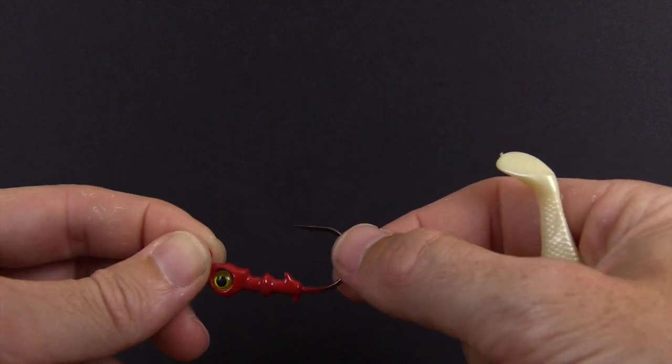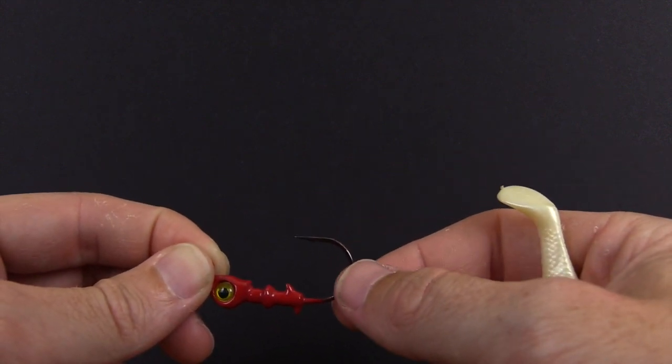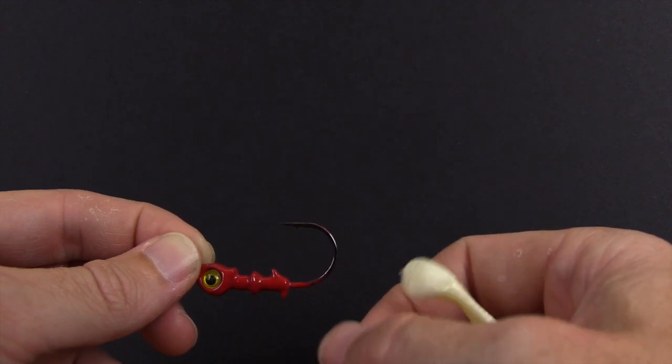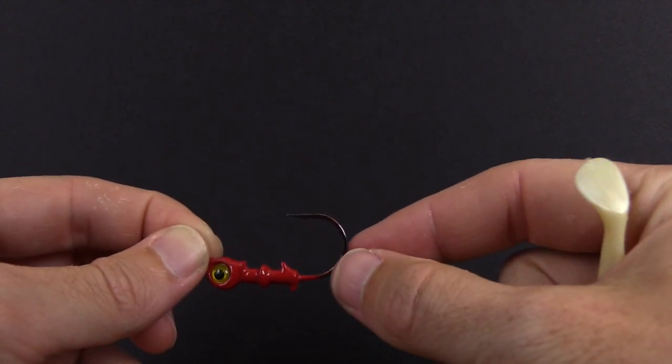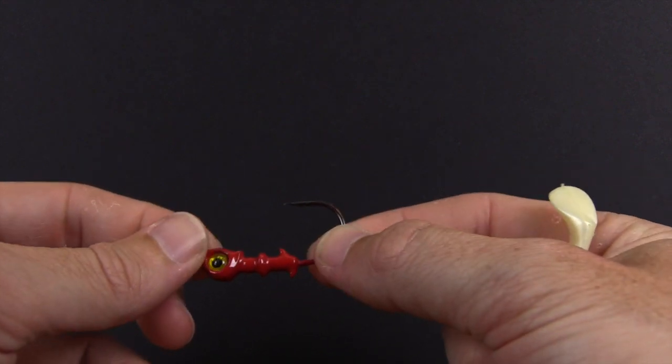For going after snook, especially on the beach, you could potentially hook into a snook 20 pounder or more, and also tarpon cruise along the beach as well. Definitely make sure that you have a jig head that has a strong hook.